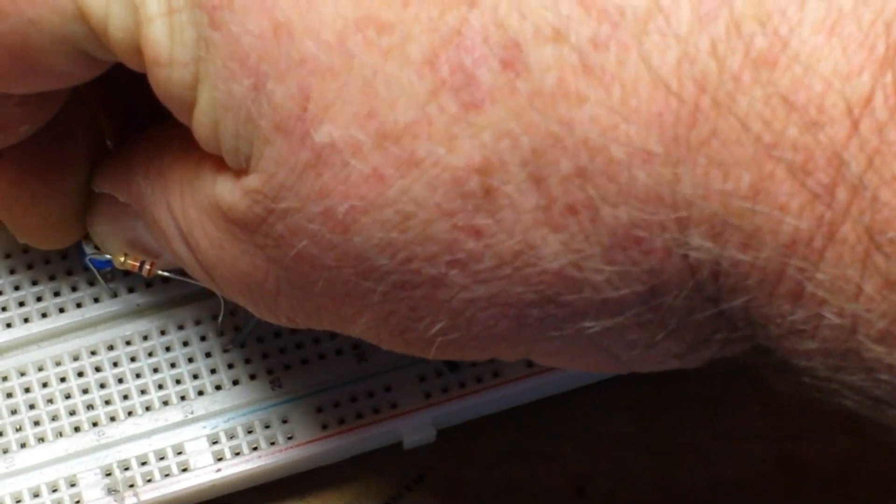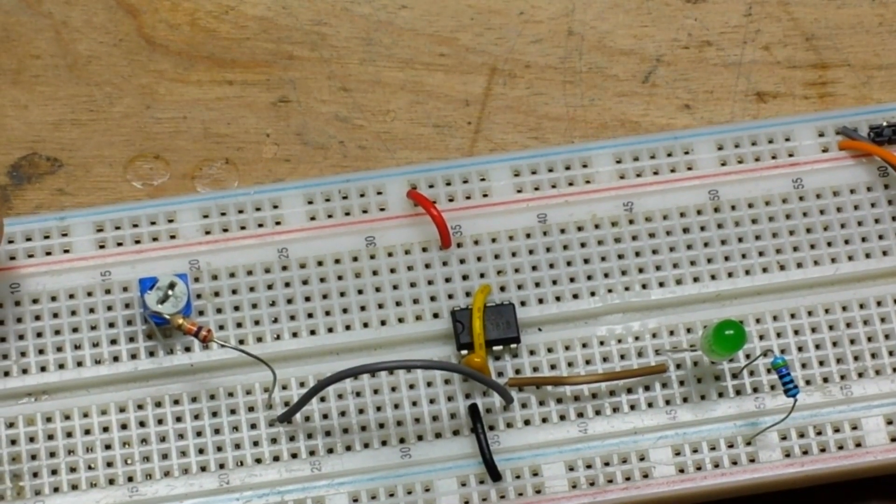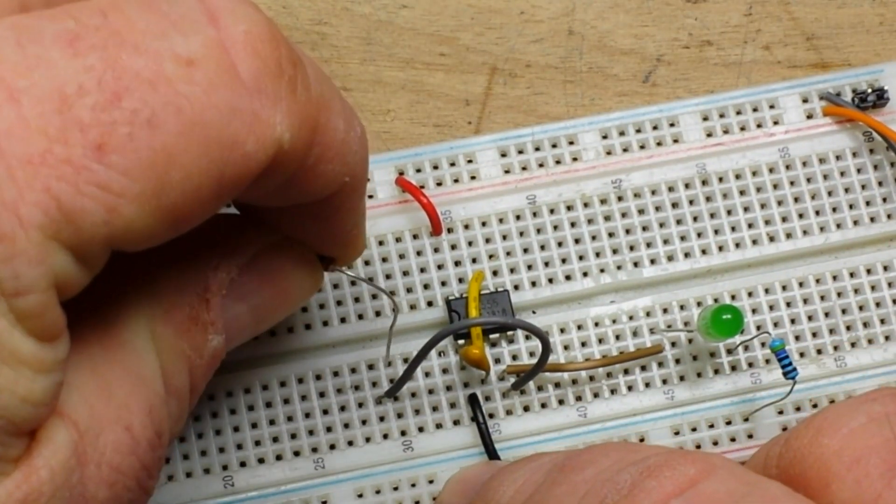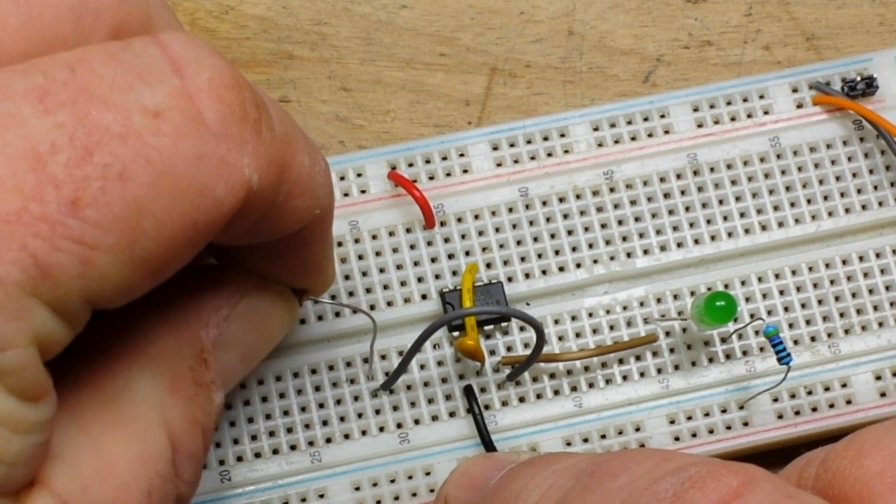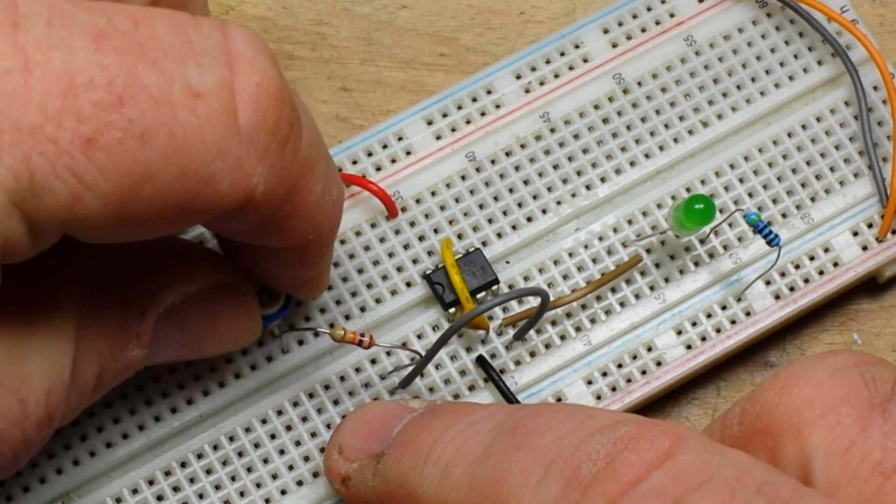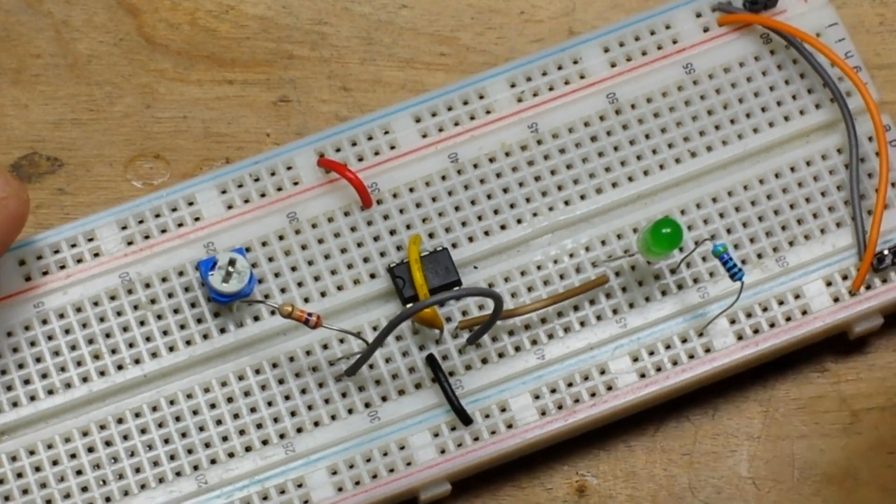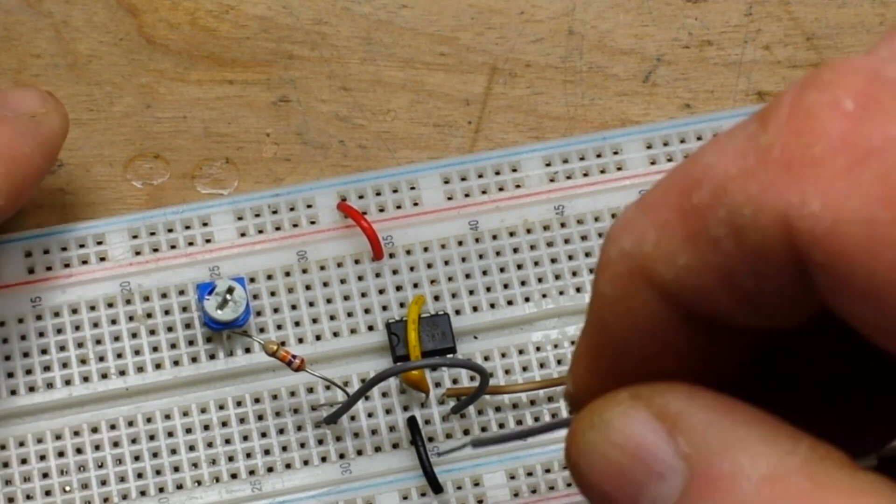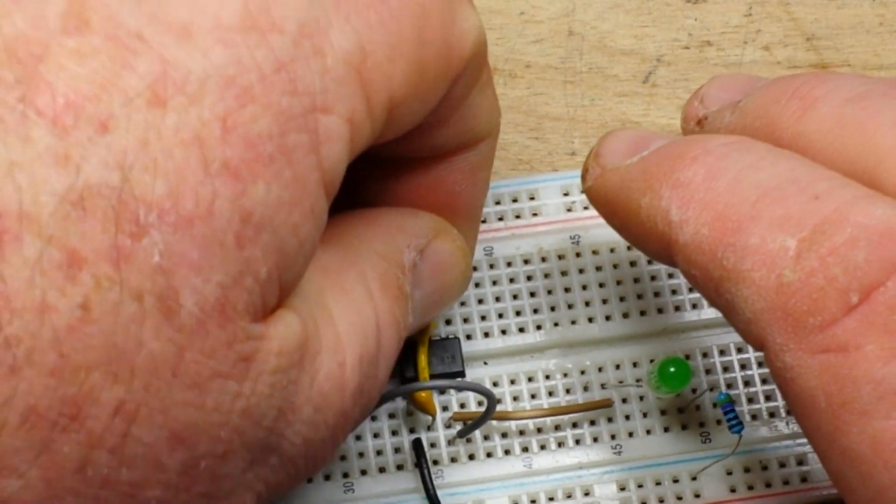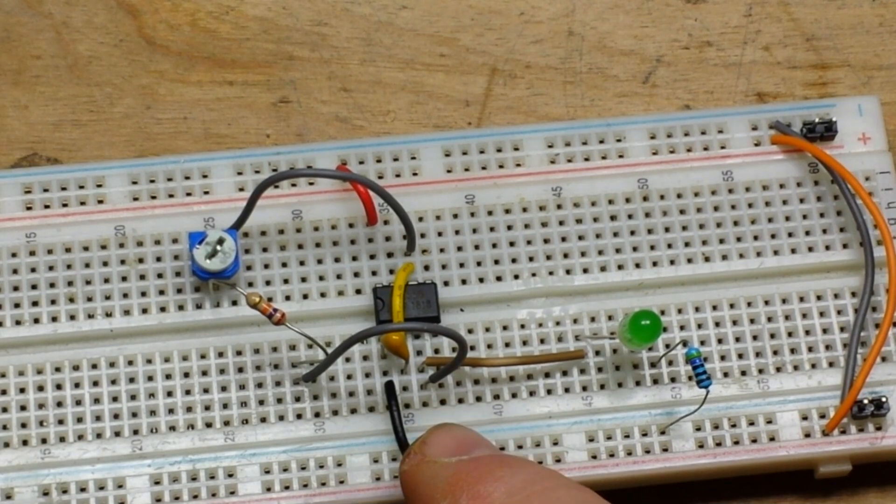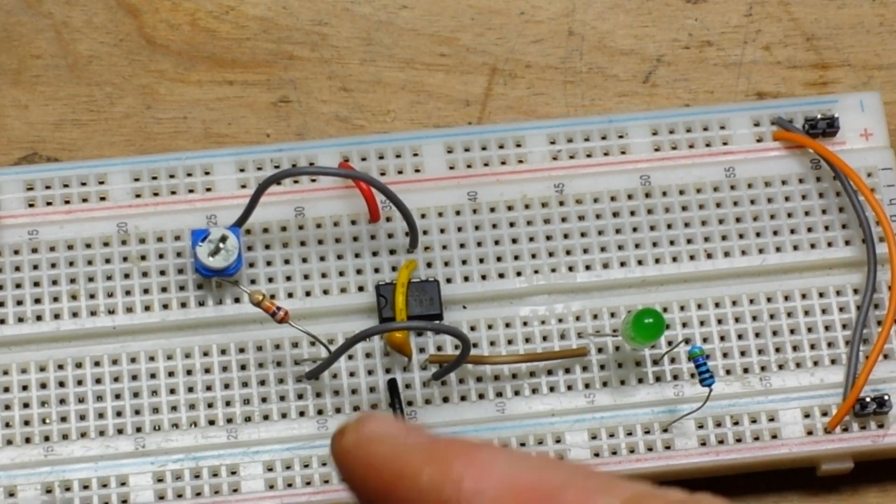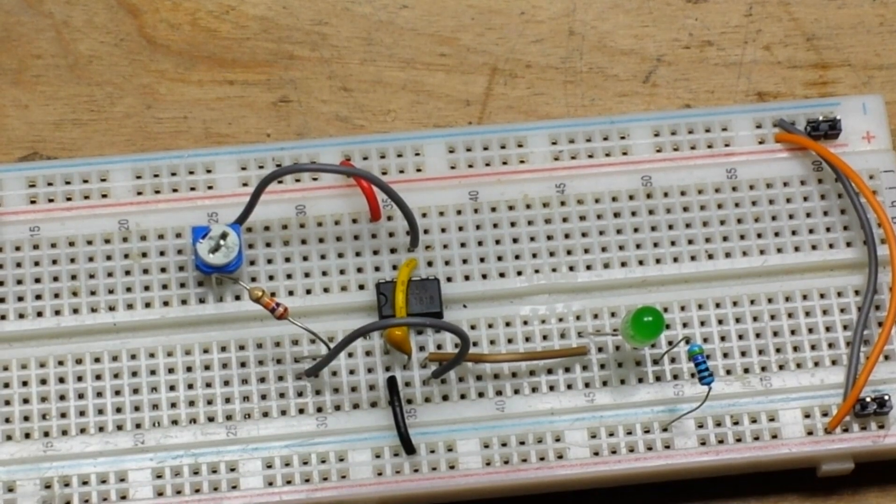And then we're only going to use the wiper and one leg of the potentiometer here. See, unscripted, we're doing this off the cuff. This is how it works when you kind of think out a project in your head. So then from one of the legs, doesn't matter which one, we are going to feed back to pin 6. So what's happening here is we're taking the output from pin 3, feeding it back through this variable resistance loop, and then back into our trigger on pin 6.